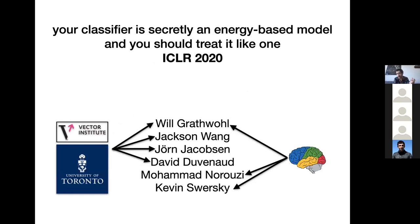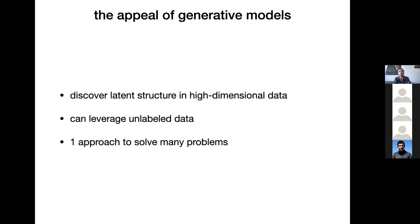The first work I'm going to discuss is called 'Your Classifier is Secretly an Energy-Based Model and You Should Treat It Like One,' presented at ICLR 2020. If you ask people why they work on generative models, they'll say generative models present a pathway for discovering latent structure hidden in high-dimensional data, can be trained on unlabeled data, and learning a good density model can address many different downstream problems currently handled by hand-tailored approaches for each individual task.